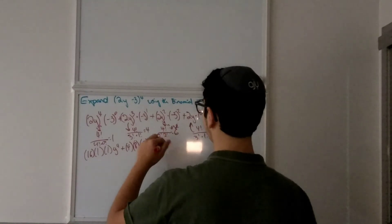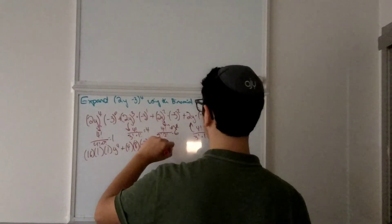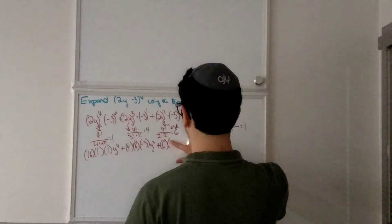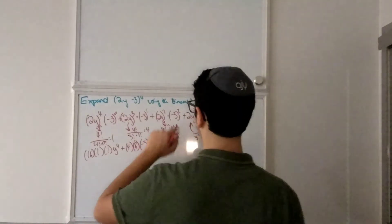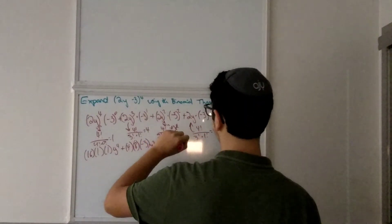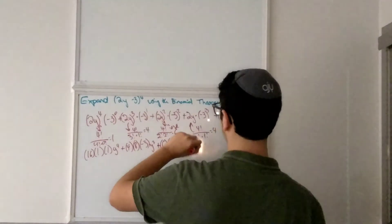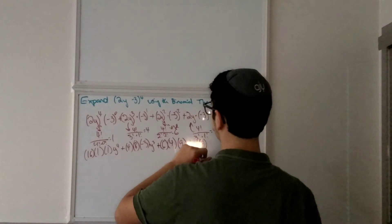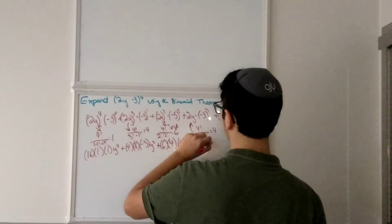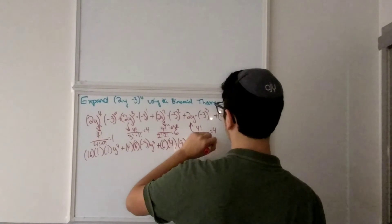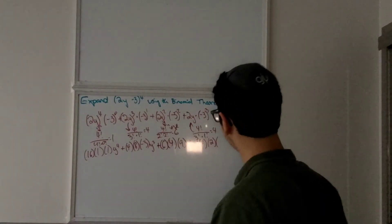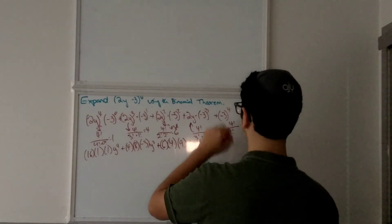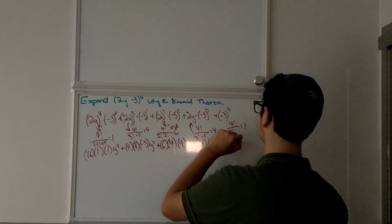Plus the coefficient 6, times 4, times 9 — that's y squared. Plus the coefficient 4, times 2, times 3 cubed which is 27, giving us the y term. And then the last term is 9 times 9, which is 81.